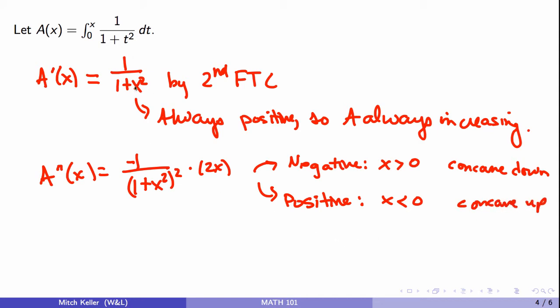We can even substitute in here x equals 0. We get A prime of 0 equals 1. So if we wanted to start sketching a graph, we know that we need to be increasing. We're going to have a tangent line of slope 1 here. We're going to be concave down here, and we'll be concave up here.